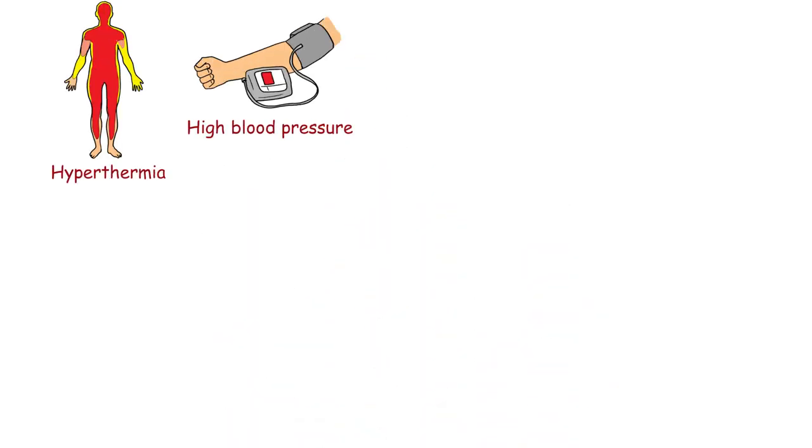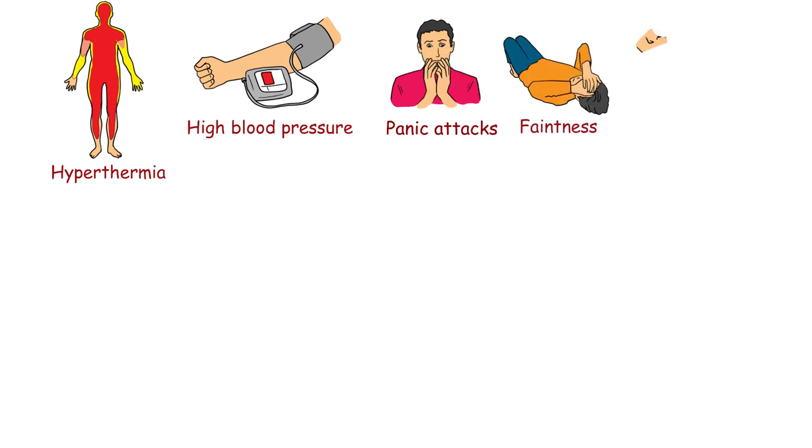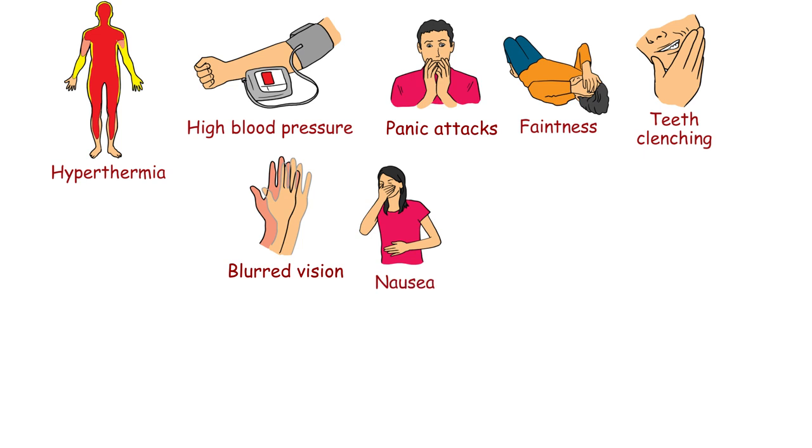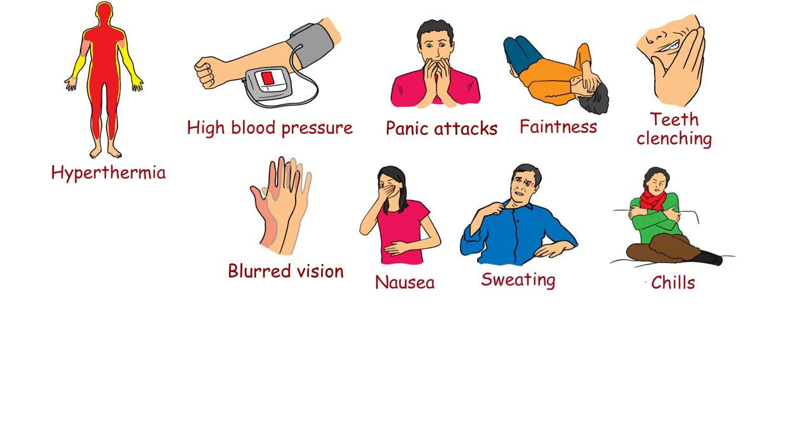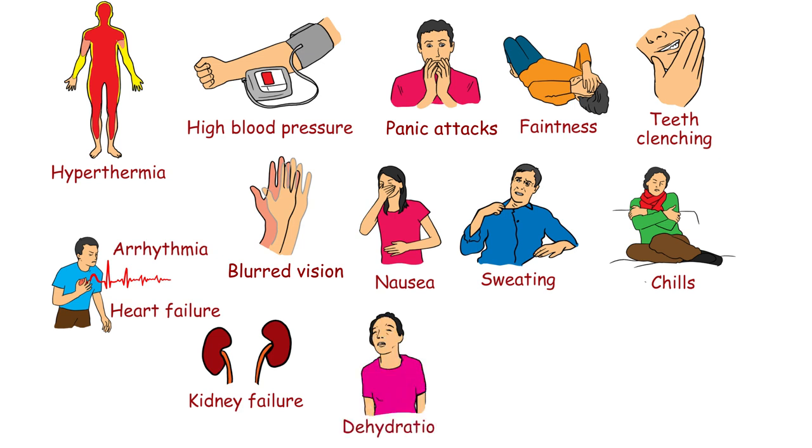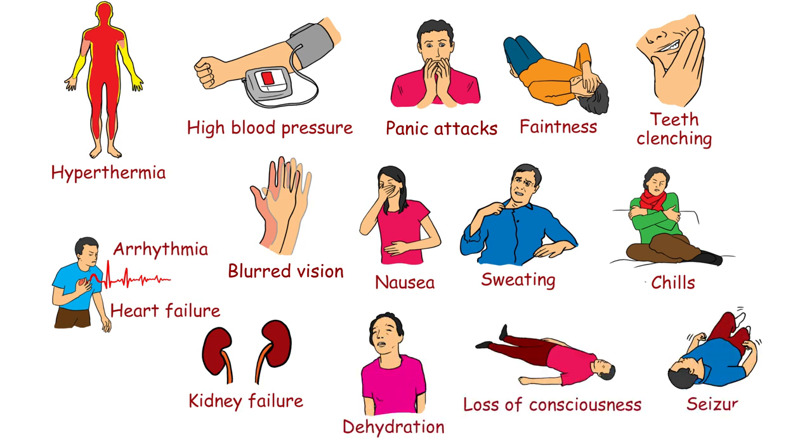Hyperthermia, high blood pressure, panic attacks, faintness, involuntary teeth clenching, blurred vision, nausea, sweating, chills, arrhythmia, heart failure, kidney failure, dehydration, loss of consciousness, and seizures are possible side effects of ecstasy abuse and/or overdose.